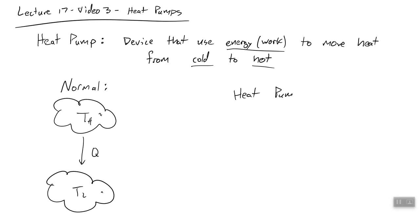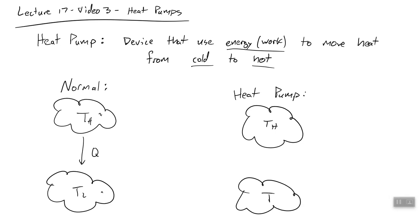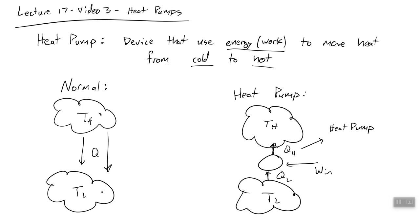A heat pump, however, can change that direction. If we've got a hot region and a cold region, we can put a heat pump into the system. And instead of heat moving from hot to cold, we can cause heat to move from cold to hot. In order to do that, we have to put in some work. A heat pump moves heat into a heated space. A refrigerator removes heat from a cold space.